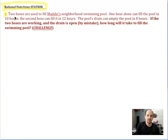So if I read this first: two hoses are used to fill Maddie's neighborhood swimming pool. One hose alone can fill the pool in ten hours, the second hose can fill it in twelve hours. The pool's drain can empty the pool in eight hours. If the two hoses are working and the drain is open by mistake, how long will it take to fill the swimming pool?